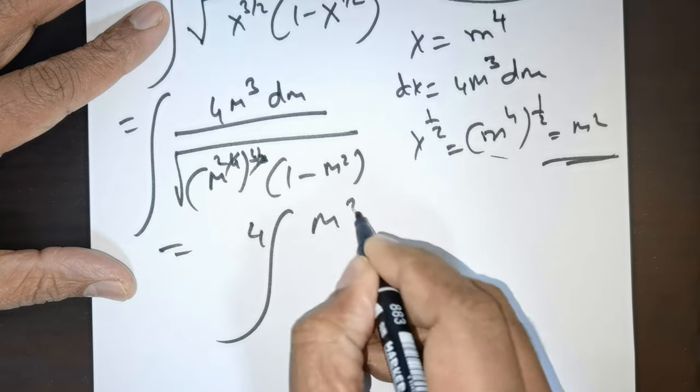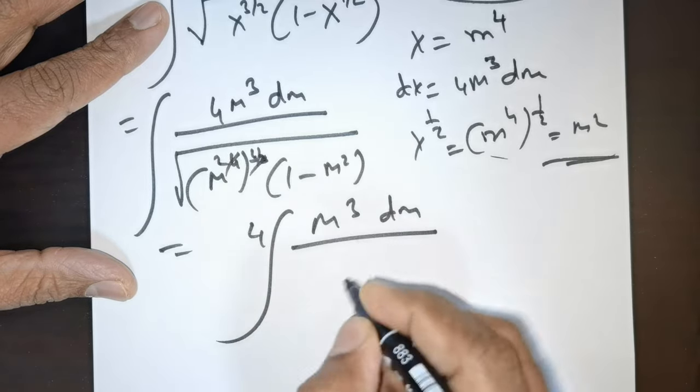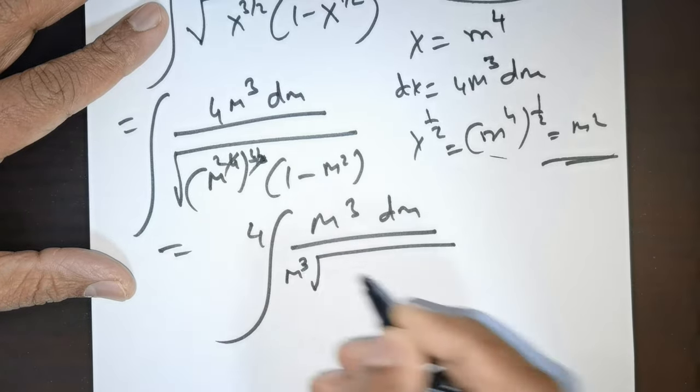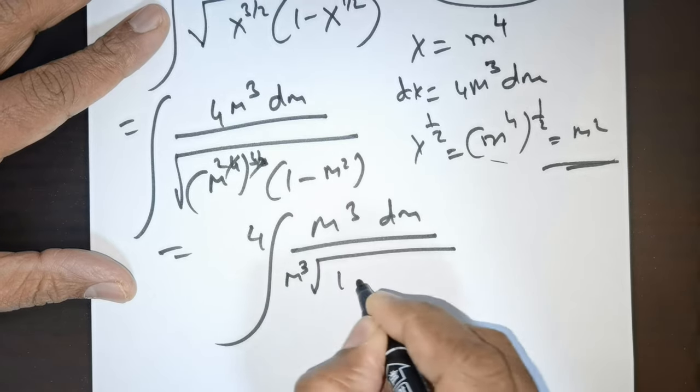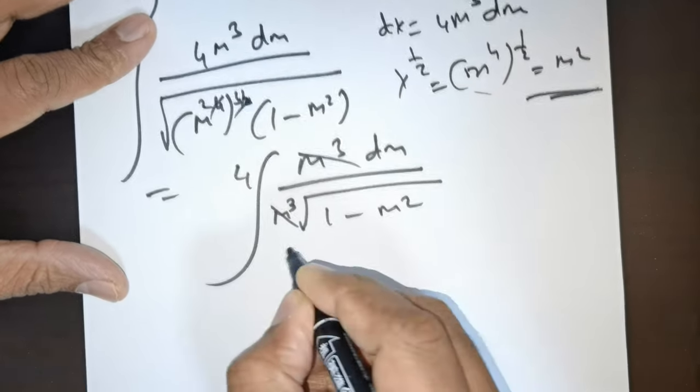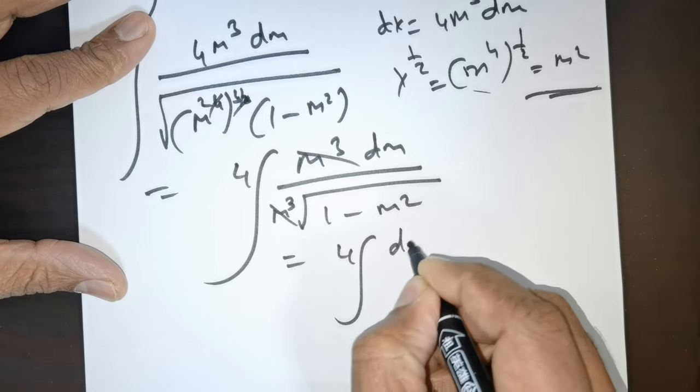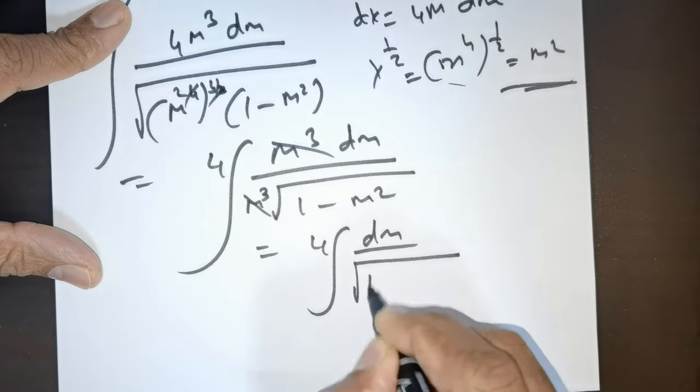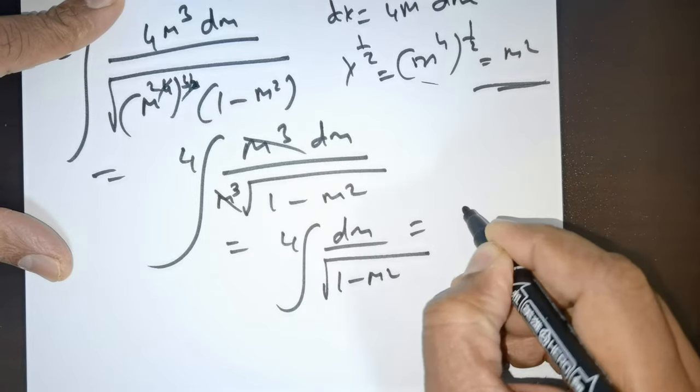Let me rewrite this: 4 times m raised to the power of 3 dm divided by, when it comes out, m cubed here, so it's 1 minus m squared. This and this can be cancelled, giving me 4 times integral dm divided by root of 1 minus m squared, which equals 4 times sine inverse of m.